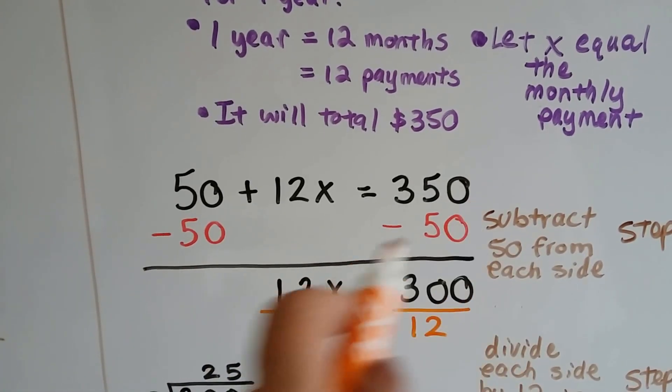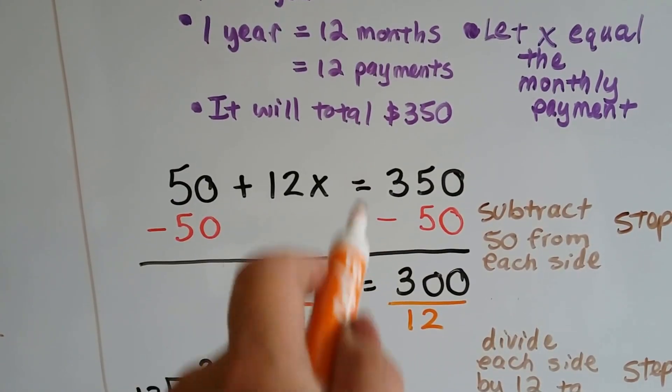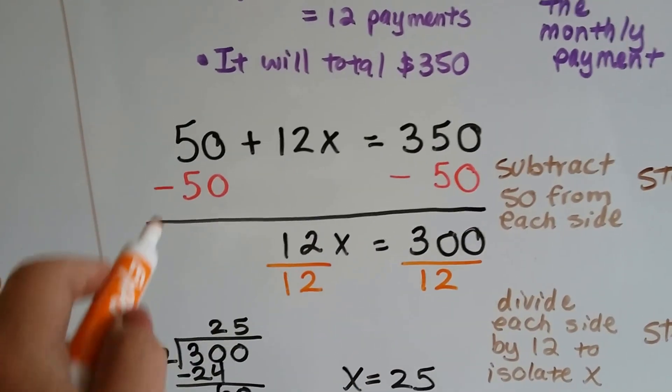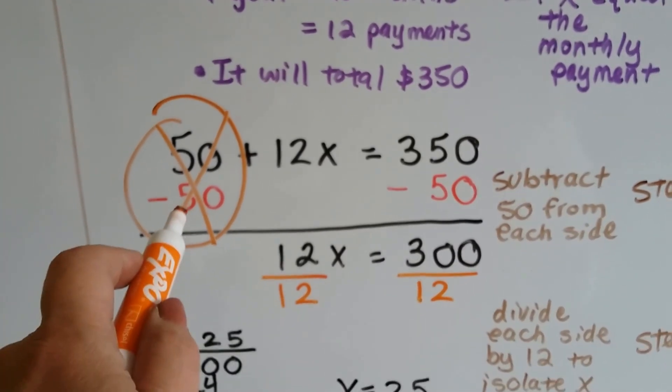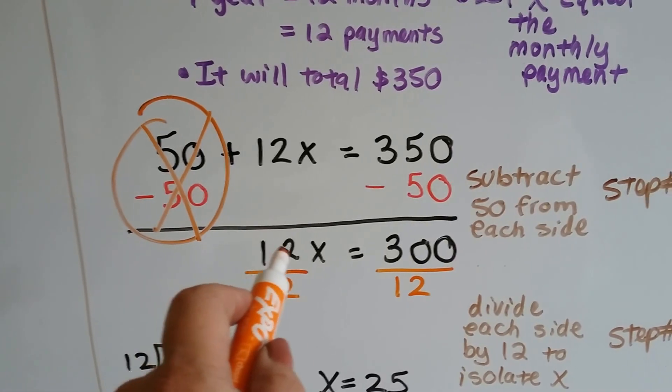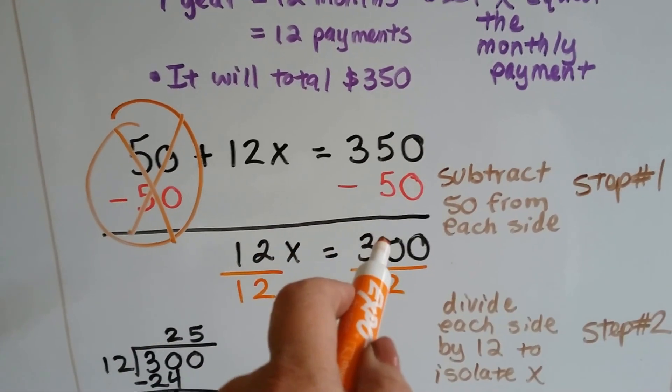Whatever we do to one side of the equation, we have to do to the other side of the equation, on each side of the equal sign. That creates a zero pair here, and the 50 cancels itself out. 50 take away 50 is 0. Now we have 12x equals 300, because 350 minus 50 is 300.